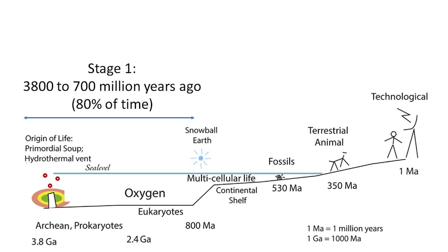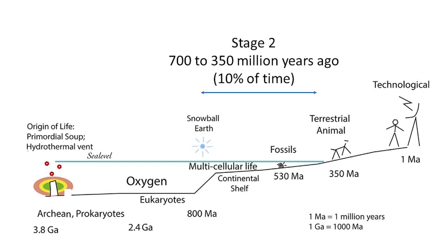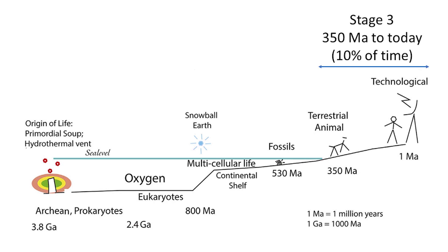Next, stage two, involving about 10% of evolution time, witnessed the development of multicellular plants and animals, including fish with backbones and limbs. Because photosynthetic plants were the base of the food chain, this stage mostly happened in the shallow water of the continental shelves. Finally, stage three, involving 10% of evolution time, witnessed colonization of land by plants and air-breathing animals. As we understand it, evolution of complex organisms requires oceans, continental shelves, and continents.